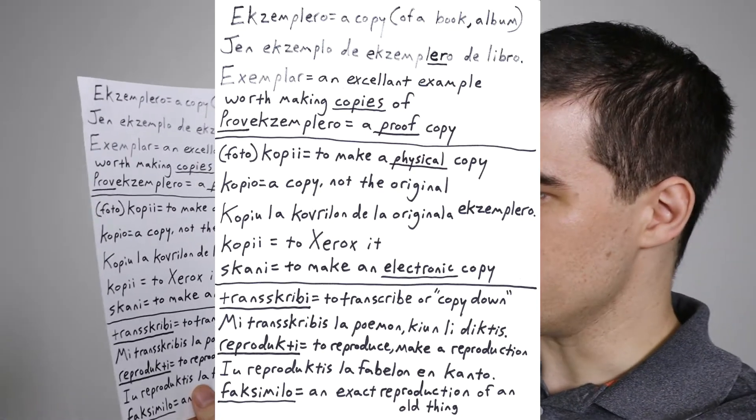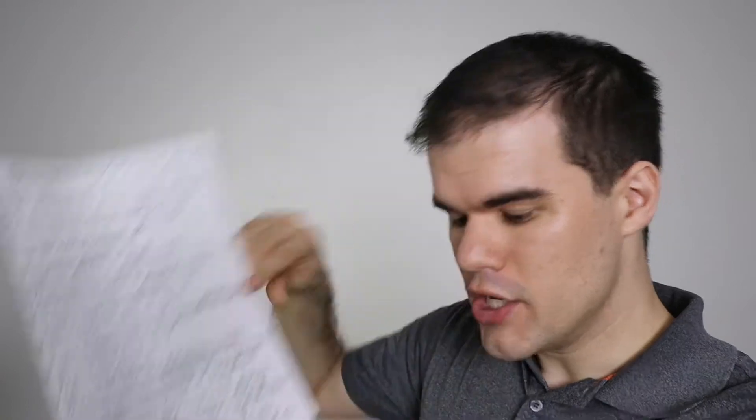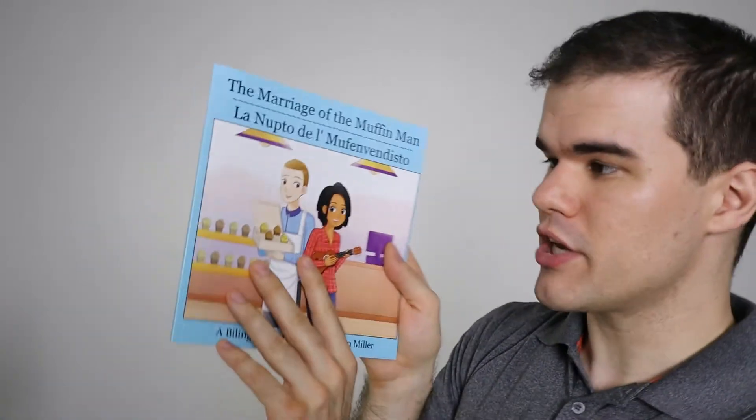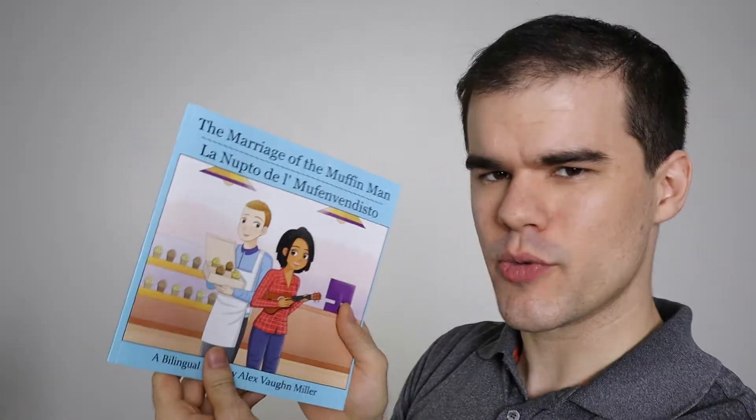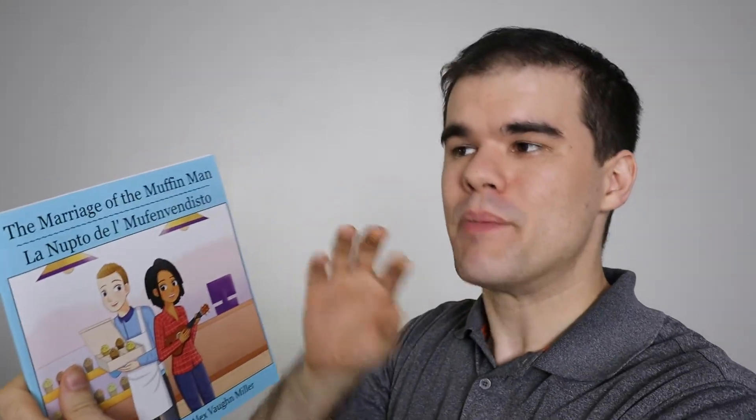Copio is a copy, and it's a copy as opposed to an original. Look at this example sentence. Copio la cofrillo de lo originale exemplaro. Copy the cover of the original copy. Let's say I took the Marriage of the Muffin Man book here and I ran it through a Xerox machine. It made a copy of the copy of the book. Do you see how it's original, the original copy? Can a copy be an original? Well, here it can. You can have an exemplaro that is an original of something. Does the book exist in my head or is it in the pages? It's not a photocopy of the book. This is the book, even though it's called a copy in English. So you can have an exemplaro that's an original. But by definition, a copio cannot be an original. If that helps you clarify the difference that exists between the two.